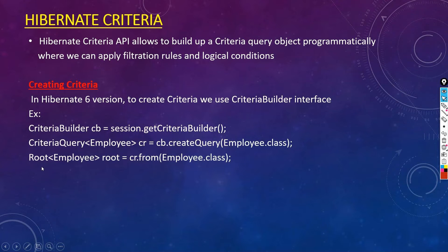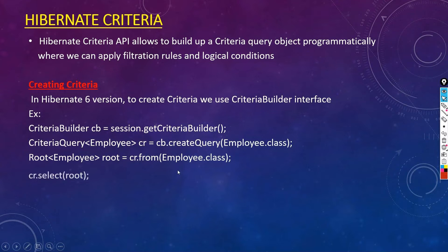Next, we have to use the Root to get the records from the table. So: Root<Employee> root = cr.from(Employee.class). This will connect to the Employee table and pull out all the records. To get all the records, we call cr.select(root). Since root is connected to Employee.class, which internally connects to our employee info table, when you call cr.select(root), all records are now present in cr.